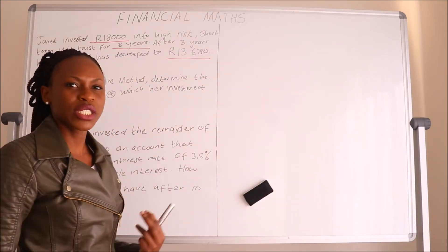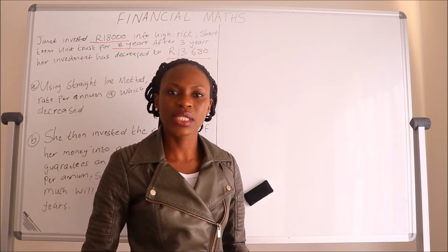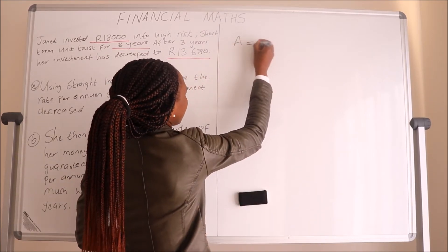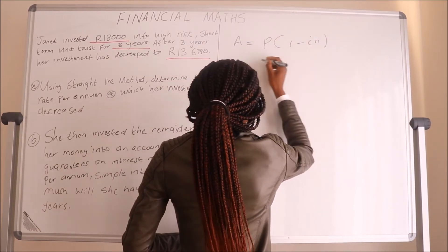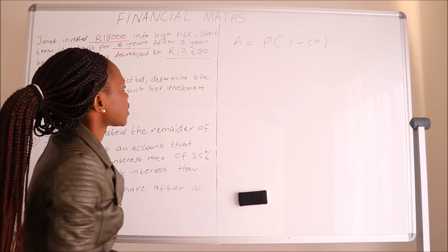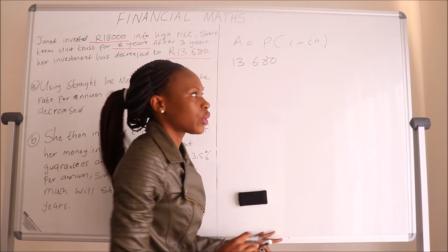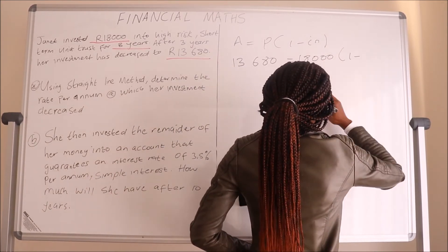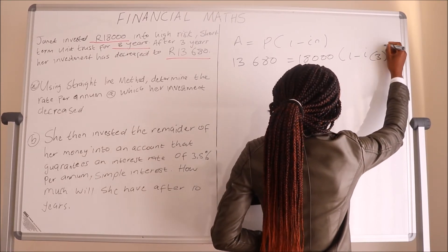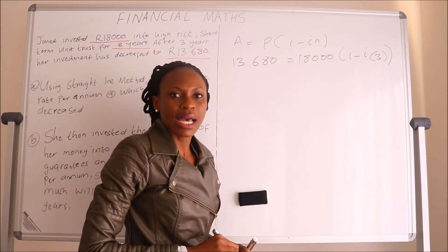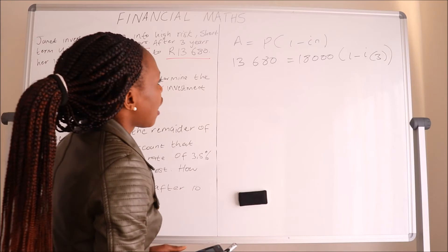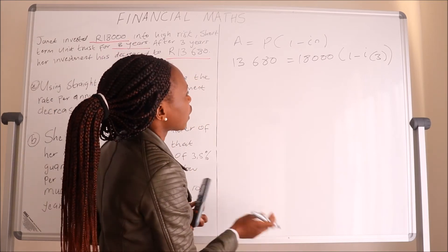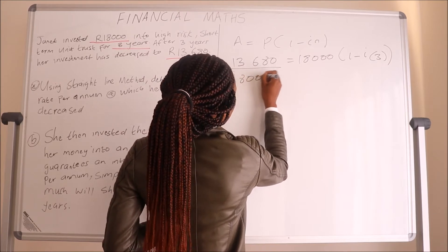Since the investment decreased over time instead of appreciating, we use the simple decay equation: A equals P into (1 minus IN). A is thirteen thousand six hundred and eighty, P is eighteen thousand, N is three years, and I is what we're looking for — we have only one unknown. I'll divide both sides of the equation by eighteen thousand.